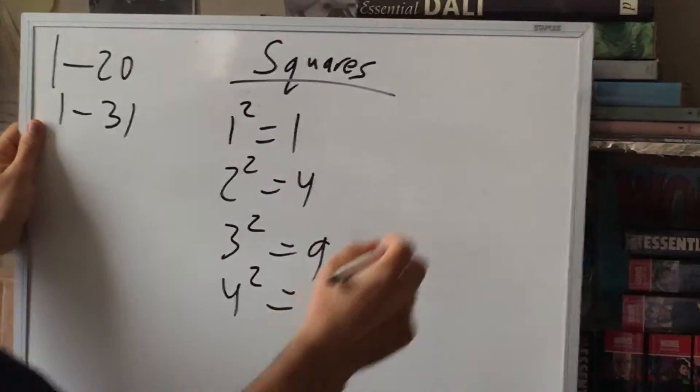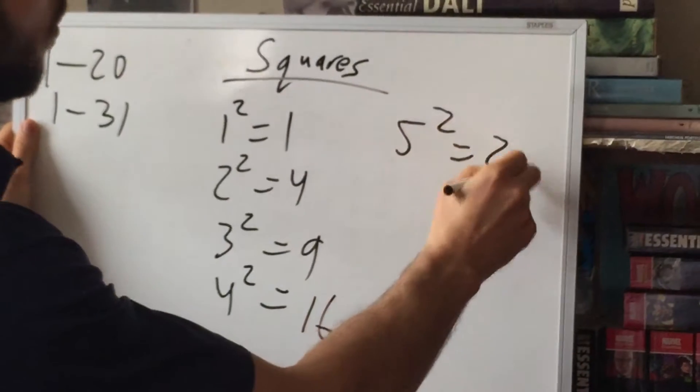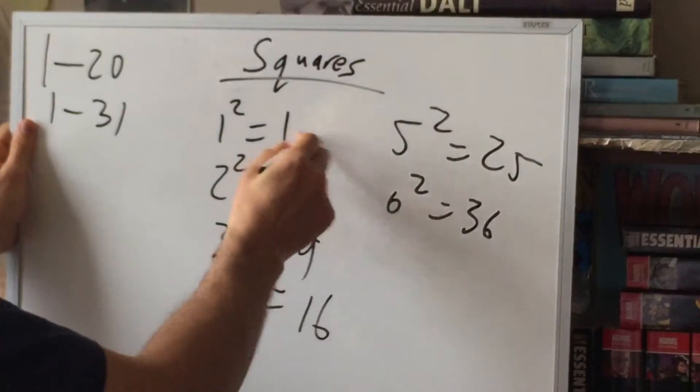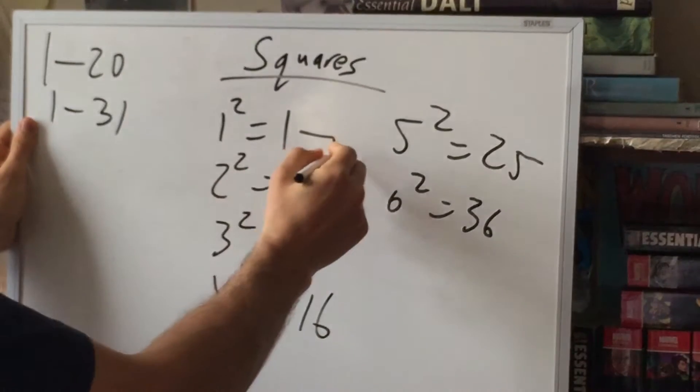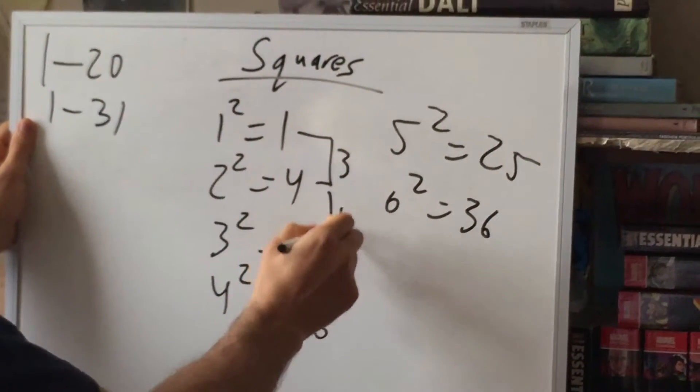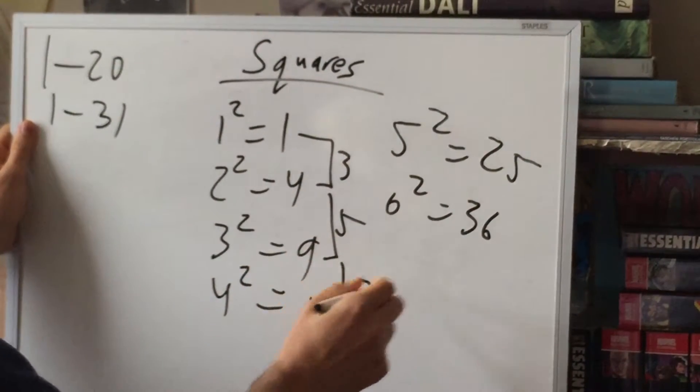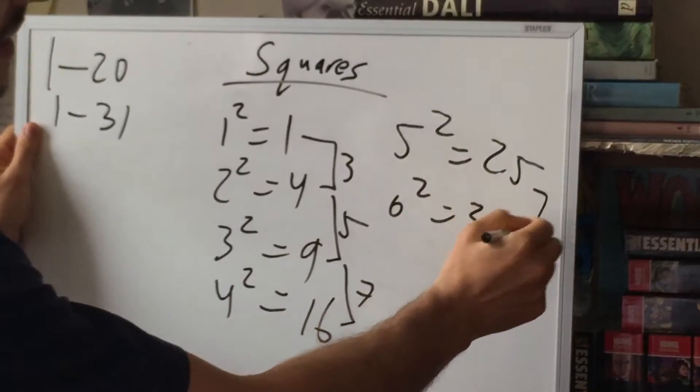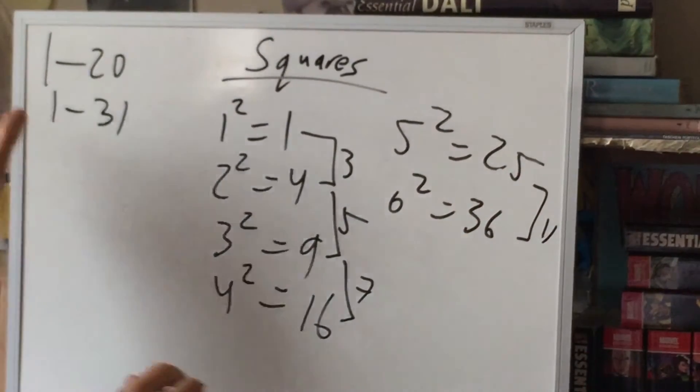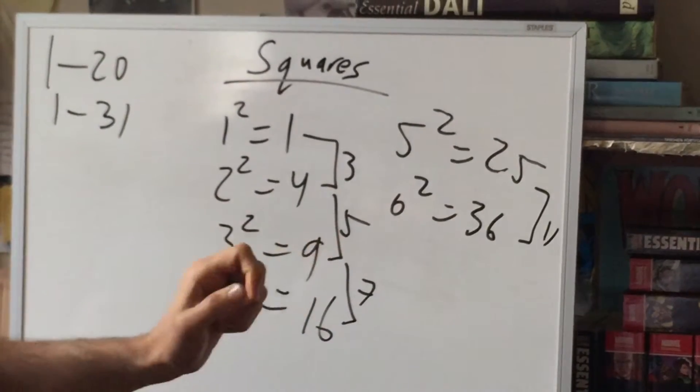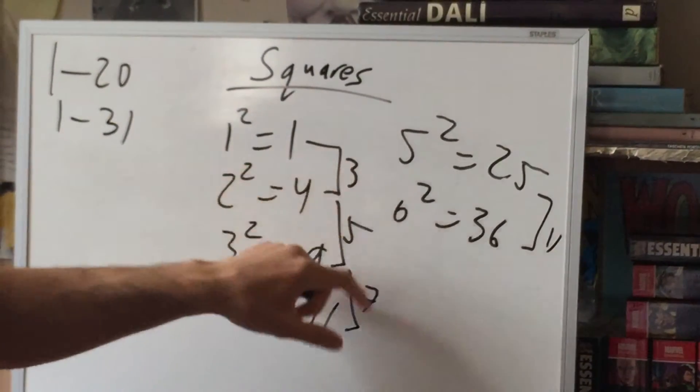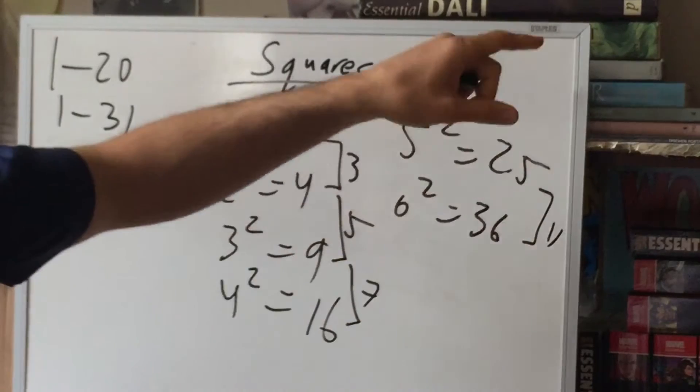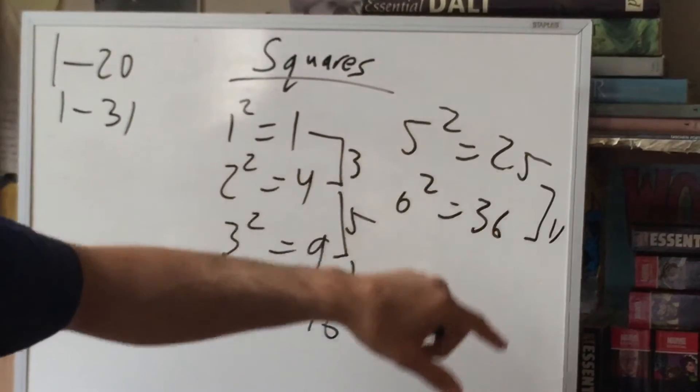So, what's the difference here? It's 3. Here, it's 5. Here, it's 7. 16 through 25 is 9. And here, it's 11. So, you probably noticed, or hopefully noticed, there's a pattern. 3, 5, 7, 9, 11, 13, 15. It's going to keep on going. So it's the next odd number.